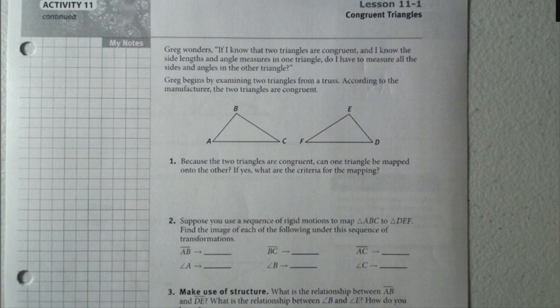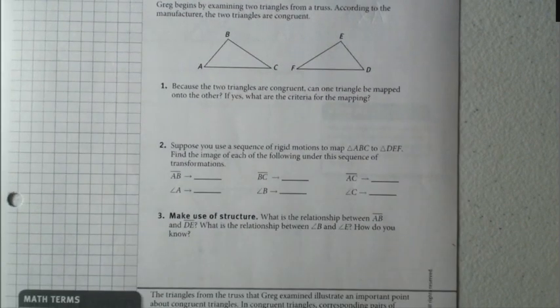Greg begins by examining two triangles from a truss. According to the manufacturer, the two triangles are congruent. Question one asks you, because the two triangles are congruent, can one triangle be mapped onto the other? If yes, what are the criteria for the mapping?